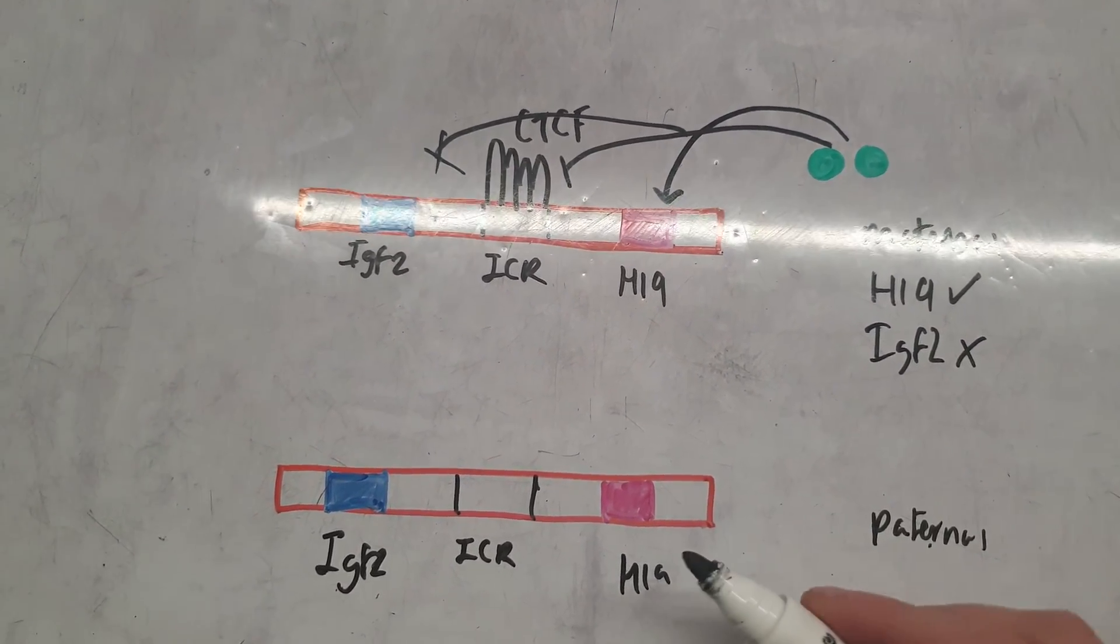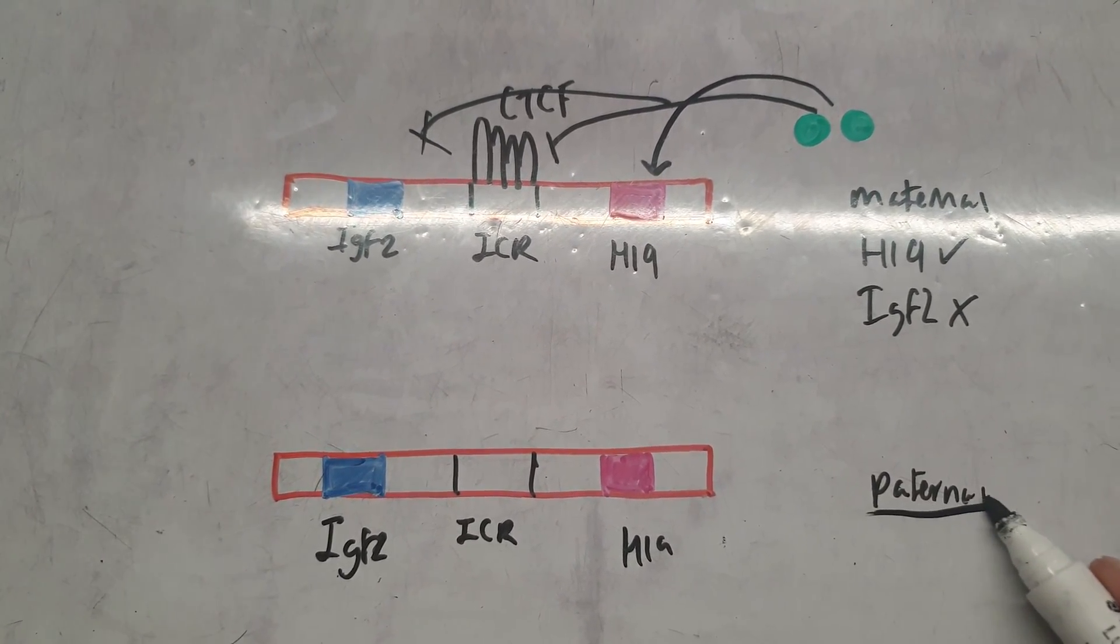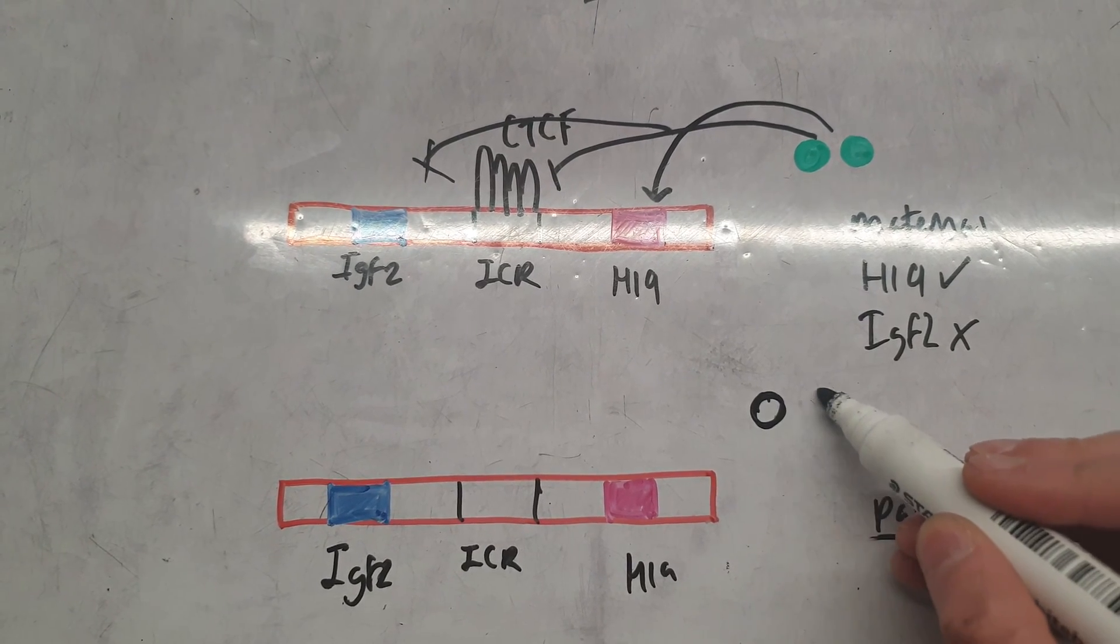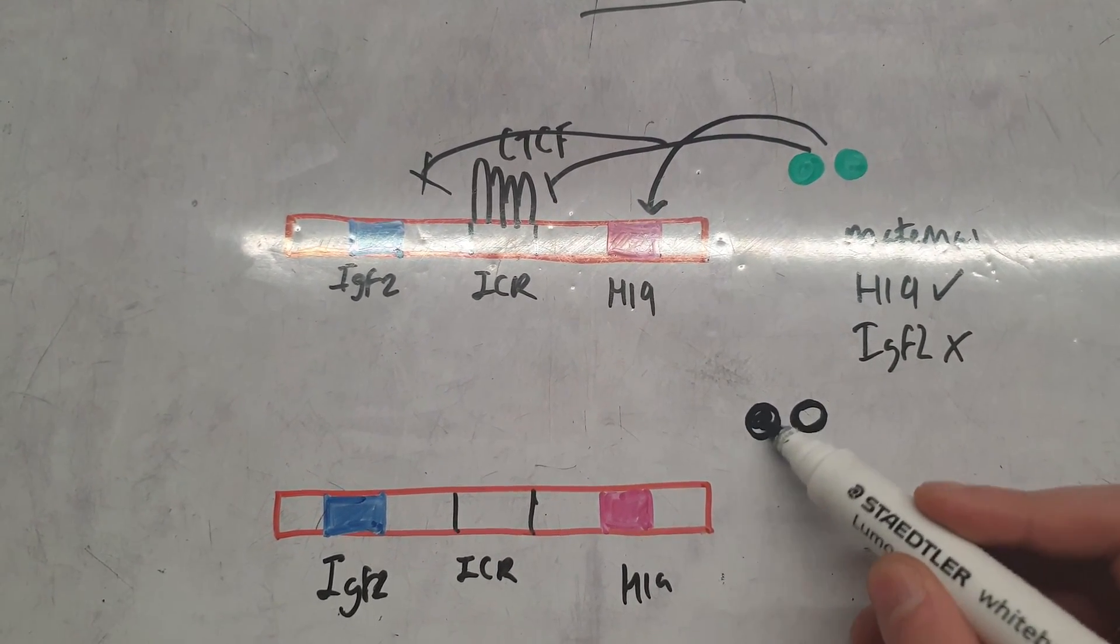But we do need an IGF2 gene, so that's where it comes from—it's coming from our paternal chromosome. Here I'll just draw my enhancers again in black.